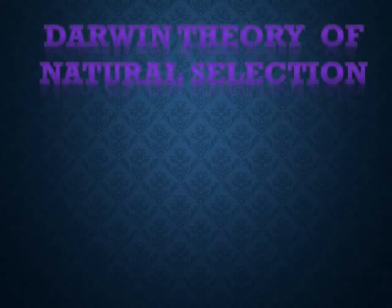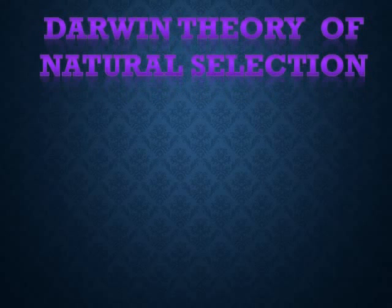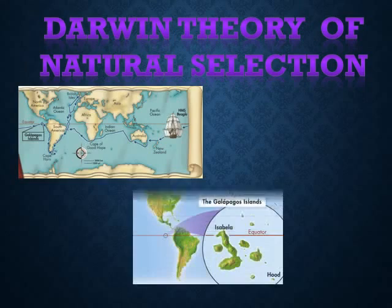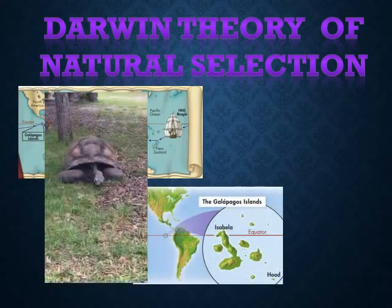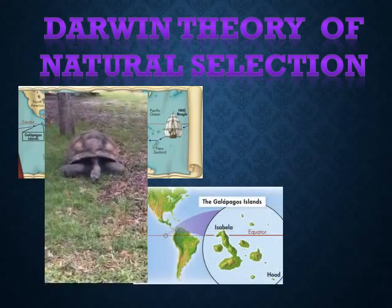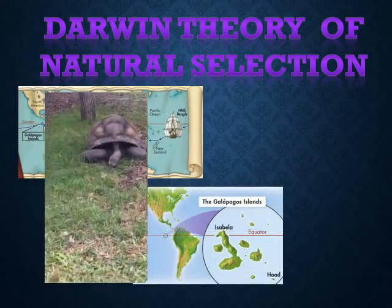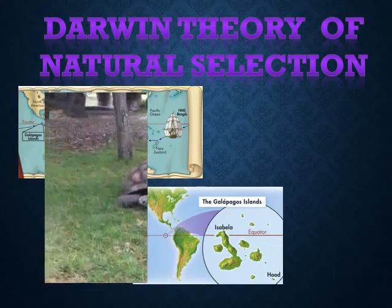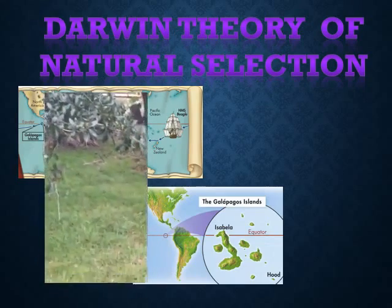The journey began in 1831 when Darwin was invited to sail on the HMS Beagle's five-year voyage. Darwin noticed that ecologically similar animal species inhabited separated but ecologically similar habitats around the globe — a pattern known as species varying globally.